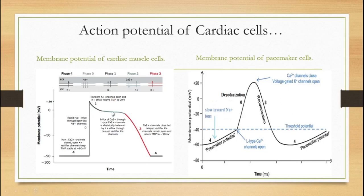Then there is the opening of K+ and calcium channels, bringing the transmembrane potential to around 0 millivolts. There is an electrical balance between the opening of calcium and potassium channels, forming an almost straight line — this is phase 2. In phase 3, the calcium channels close and repolarization occurs via the potassium channels, restoring the negative resting potential.